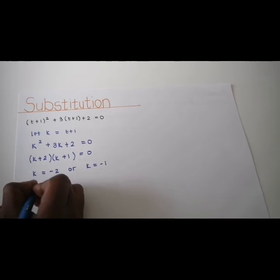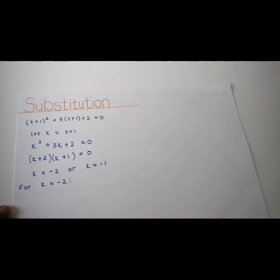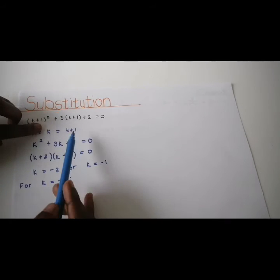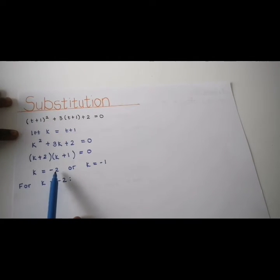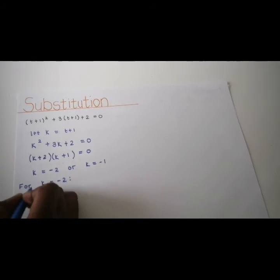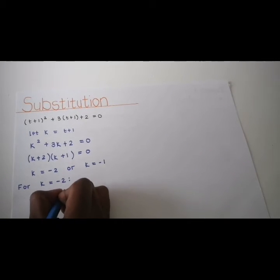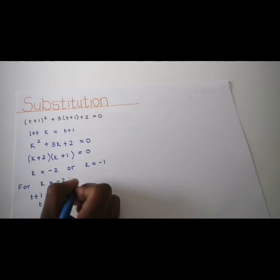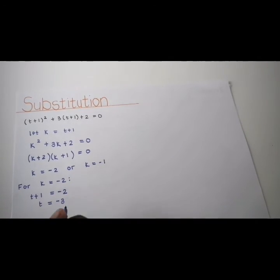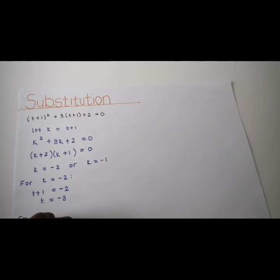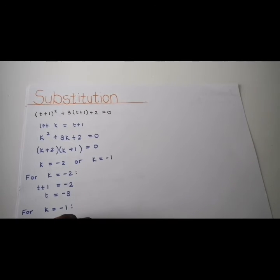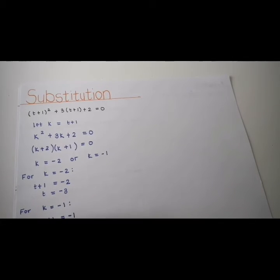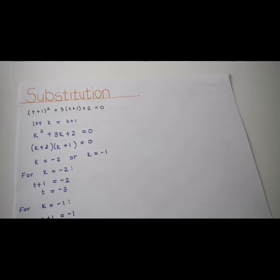For k equals negative 2: we said k equals t plus 1, but here k equals negative 2, so we equate them — t plus 1 equals negative 2, therefore t equals negative 3. And for k equals negative 1: t plus 1 equals negative 1, take that over — t equals negative 2. And that is your solution.